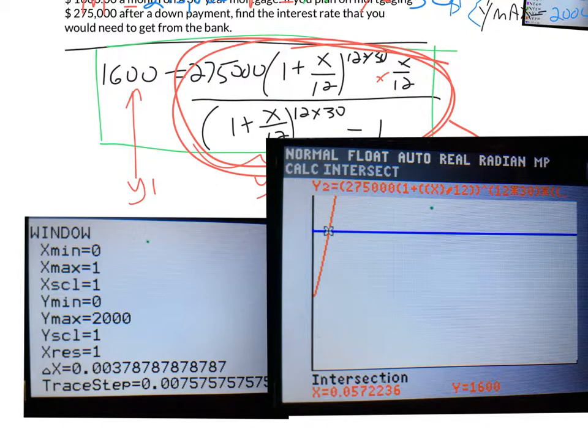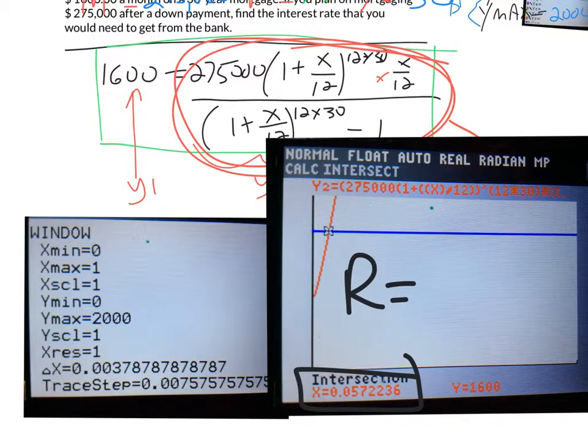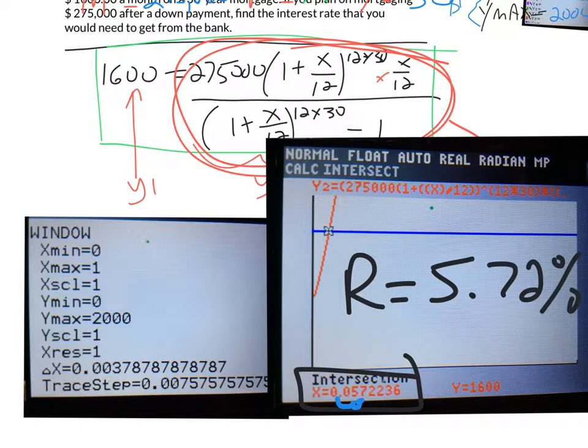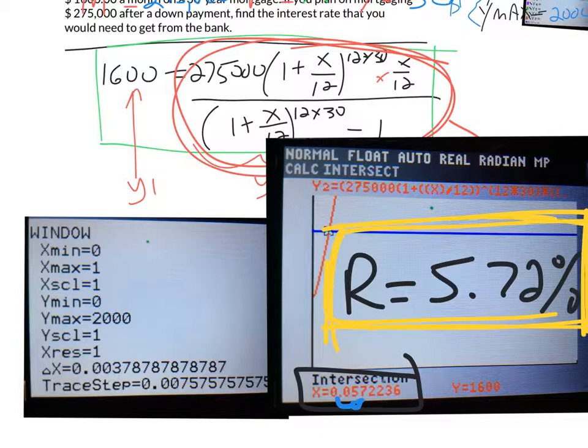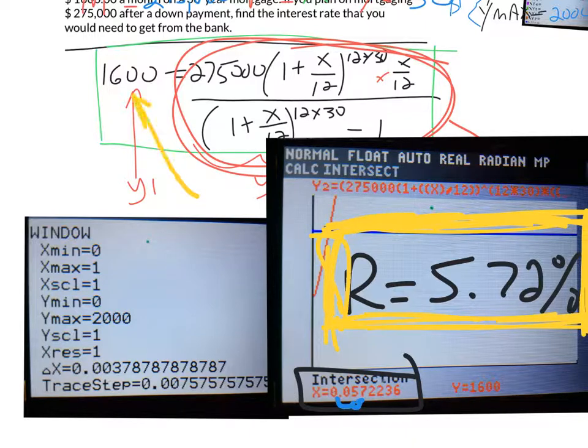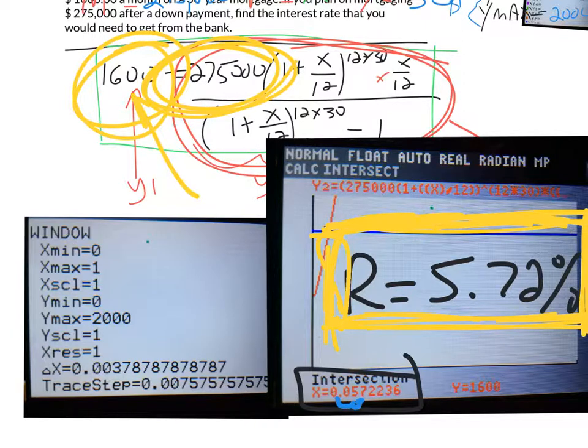Now, again, what are we trying to do? We're trying to solve for the interest rate R. So X represented R. So here is my interest rate. Now, you always have to convert your percent into a decimal. But if you want to see what this is as a percent, we would do the opposite. We would move the decimal point two places to the right. So this is 5.72%. Normally, with percentages, we're going to go to two decimal places. So here, you would have to get from the bank a mortgage for 30 years at 5.72% in order to make your payments $1,600 a month if you wanted to mortgage $275,000.